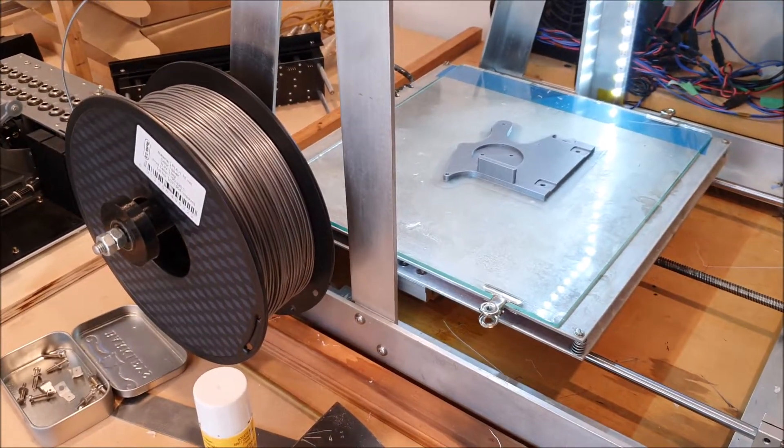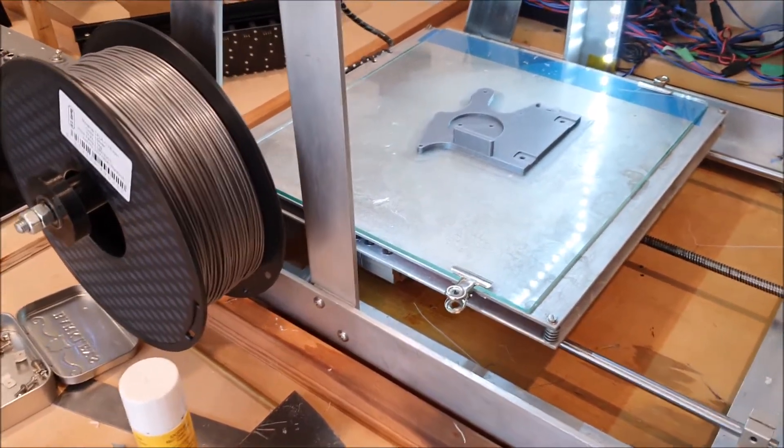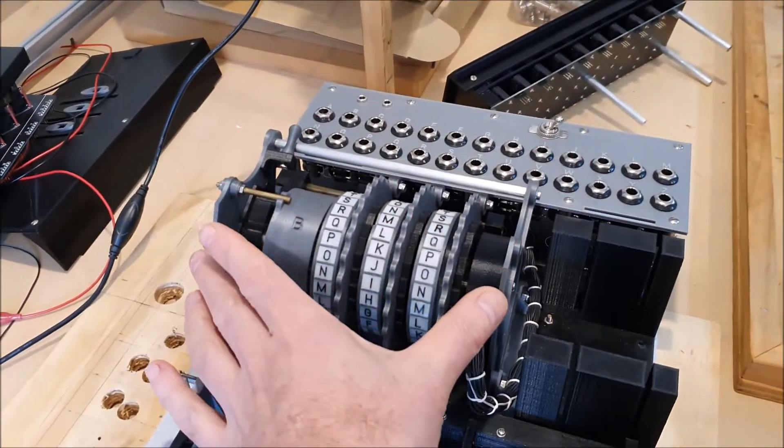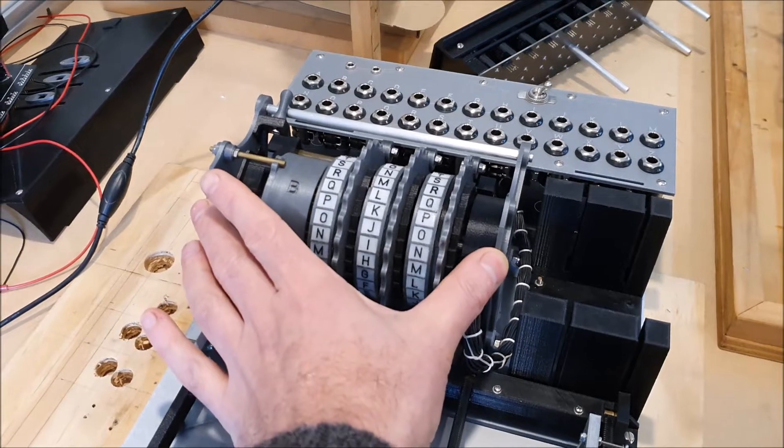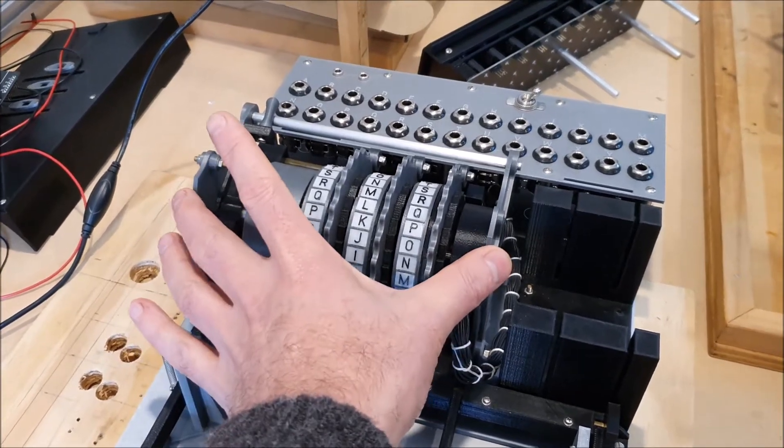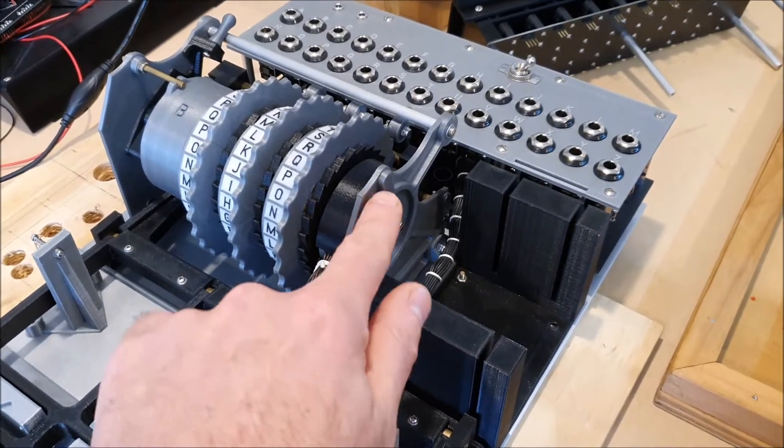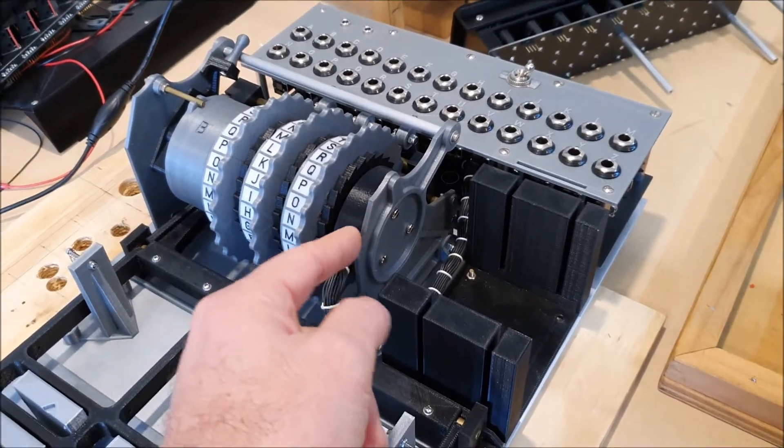Another quick Enigma update. I've started reprinting the sides of what I call the rotor holder, these bits here, just to make them a bit more rigid. So previously I had them sort of ribbed, but I've just made them full thickness now.